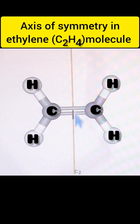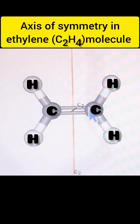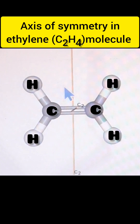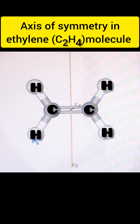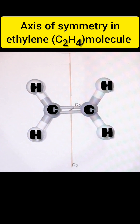Along this axis we rotate the molecule 180 degrees, and after the rotation this hydrogen atom will move to this position, this hydrogen will move to this position, and these two hydrogen atoms also change their position. So when we rotate the molecule 180 degrees we get the same configuration before and after the rotation.